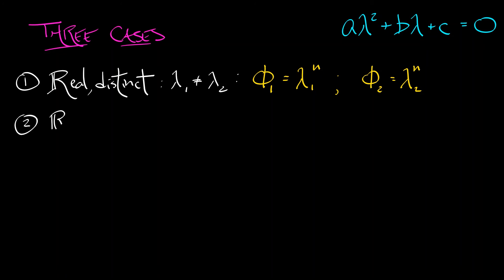The next slightly more complicated case is when you have real repeated roots. In this case φ1 is just λ^n as you would expect. φ2 is n times λ^n. See how well that compares with the continuous time case?